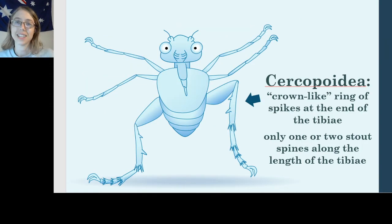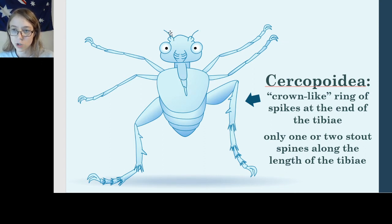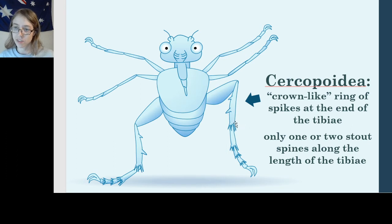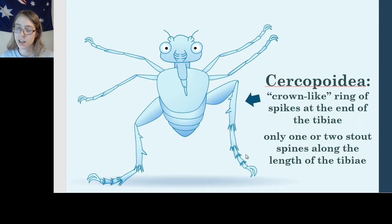So how do I identify a froghopper or a spittlebug? The key characters are all in the legs. Froghoppers and spittlebugs will have a rostrum, just like every other hemipteran. They're going to have short bristle-like antennae, like other Auchenorrhynchans, and uniquely to the Cercopoideas, they're going to have a ring of crown-like spikes at the end of their tibiae. They're also going to have only one or two stout, short spikes along the length of their tibia, and may also have a crown-like ring of spines on some of their tarsomeres as well.